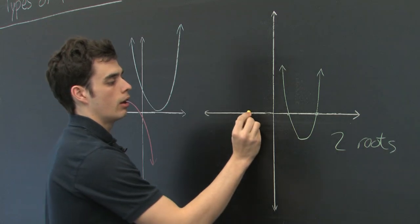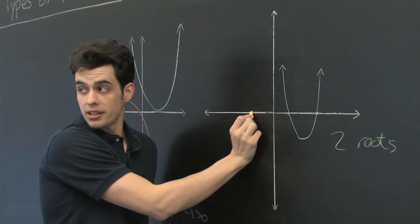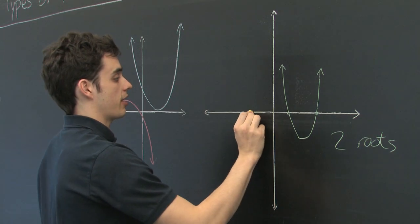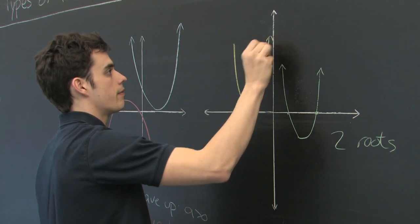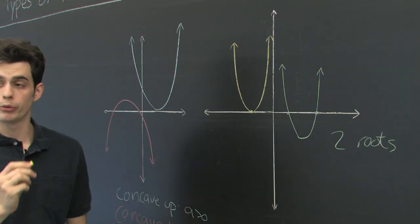Alternatively, if the vertex itself is sitting on the x-axis, there will be one root.